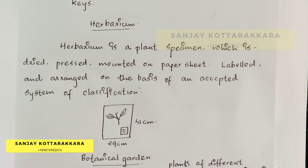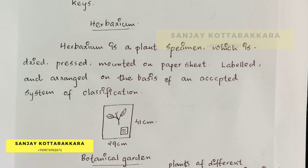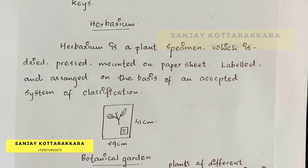The plant is labeled and arranged on the basis of an accepted system of classification. The plant is labeled on the sheet with its scientific name on the right-hand bottom side. The plant is dried, pressed, and mounted on a paper sheet. It will be labeled and arranged in the accepted system of classification.